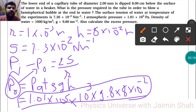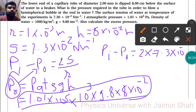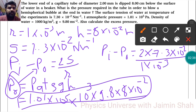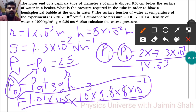After finding P₀, we put it in the formula. Pᵢ minus P₀ = 2 into S, where S = 7.3×10⁻² upon R, and R = 1×10⁻³. So we get Pᵢ. Now that we know both Pᵢ and P₀, the difference Pᵢ minus P₀ — our excess pressure — is 146 Pascal.